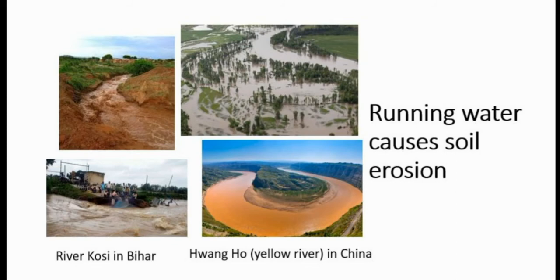Two examples are given: the River Kosi in Bihar and the Wang Ho River — also called the Yellow River — in China. The Wang Ho River is also called the 'Sorrow of China' because it changes its course very often, resulting in loss of life and property. Similarly, the River Kosi in Bihar changes its course frequently and caused great havoc in 2008 when lakhs of people were affected.